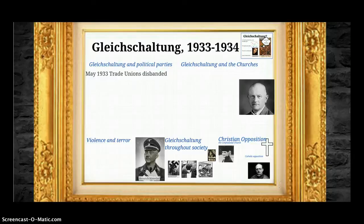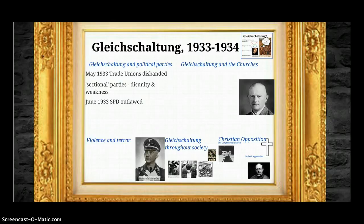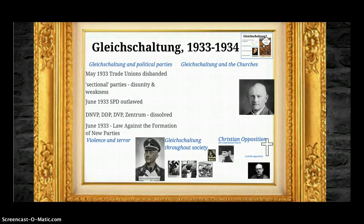The so-called sectional parties — the political parties of Germany — promoted disunity and weakness in the Nazi way of thinking, rather than a national consciousness. They were gradually dismantled. In June of 1933, the Social Democrats, who had voted against the Enabling Act, were outlawed. The other parties — the German Nationalist Party, the middle-class parties, the German Democratic Party, the German People's Party, and the Catholic Party — were dissolved, essentially self-dissolved in a climate of fear and intimidation. June 1933 also saw the law against the formation of new parties.